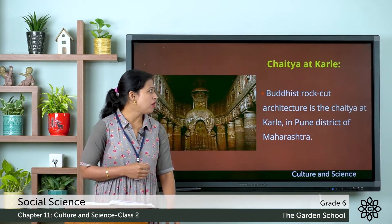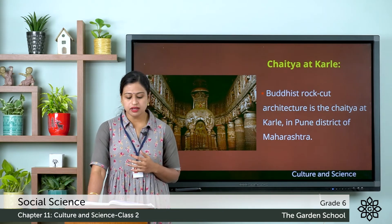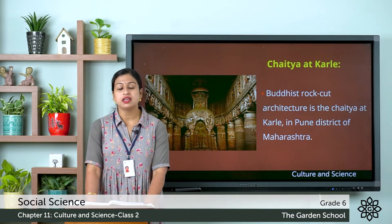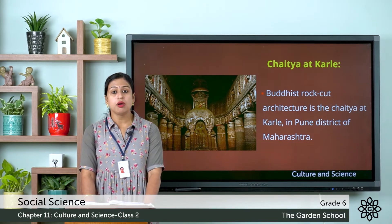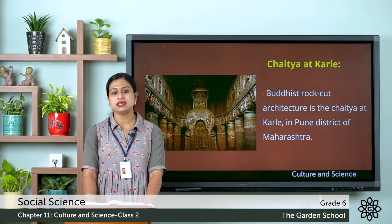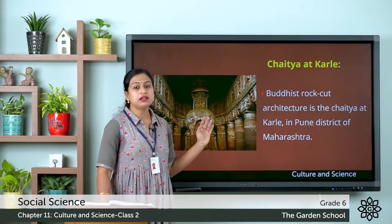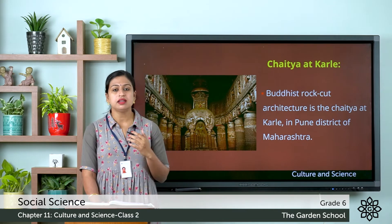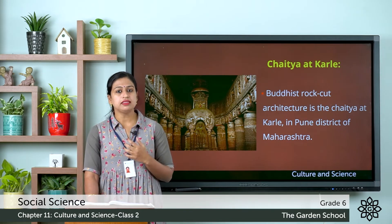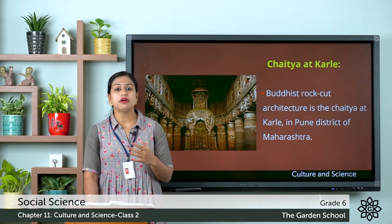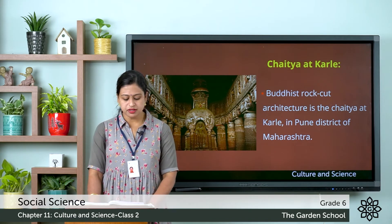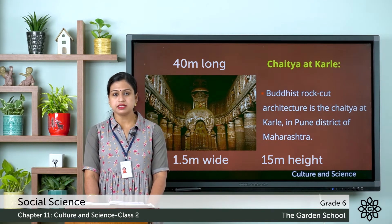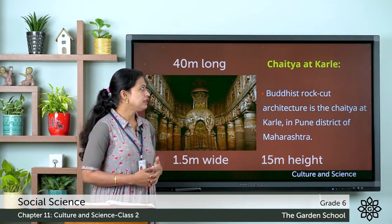Next, let us discuss about the Chaitya at Karla. The most impressive specimen of Buddhist rock-cut architecture is the Chaitya at Karla, which is located in Pune district of Maharashtra state. Chaitya means a large hall with a number of columns. Its measurements are 40 meters long, 15 meters wide, and 15 meters high.